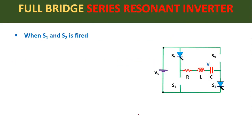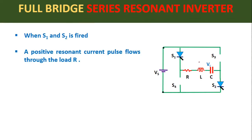Now we will understand the working of this full bridge series resonant inverter. First we will turn on S1 and S2 SCRs. When S1 and S2 go into the ON condition, S3 and S4 will be in the OFF condition and act as open circuit, as you can see in the circuit diagram. When S1 and S2 start conducting, a positive resonant current pulse flows through resistance R in the clockwise direction. The load current enters at point X and leaves at point Y.